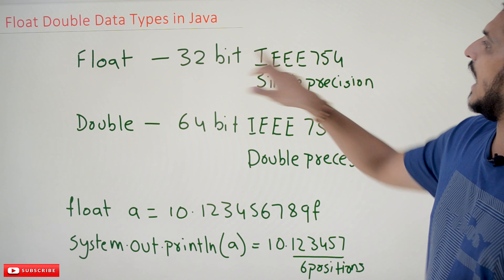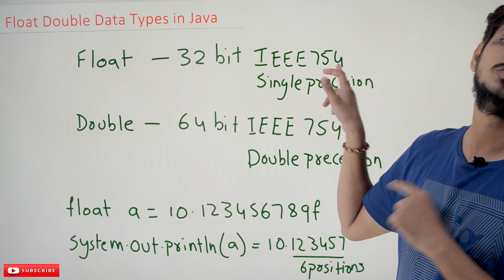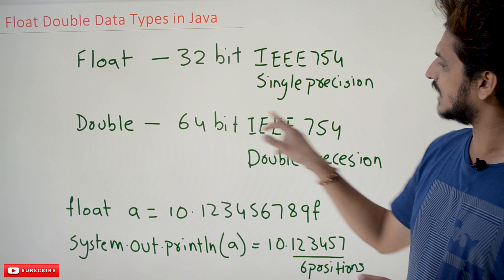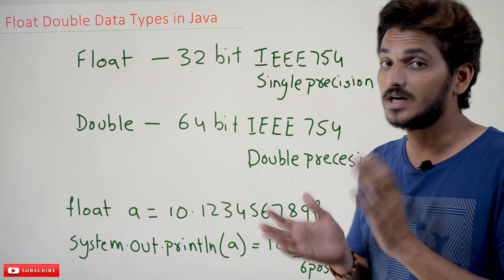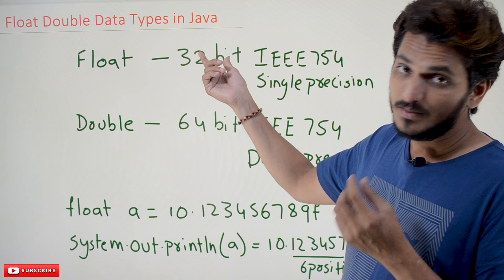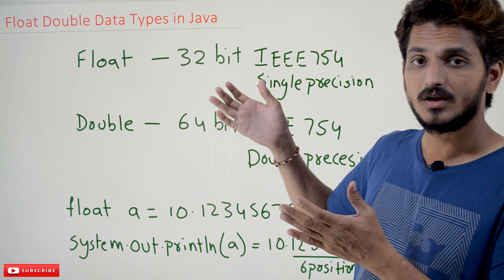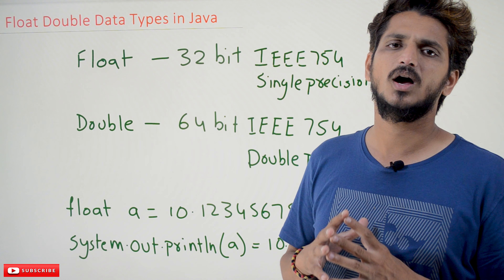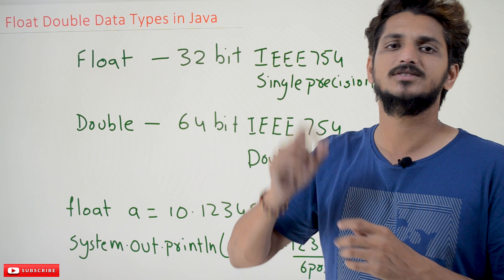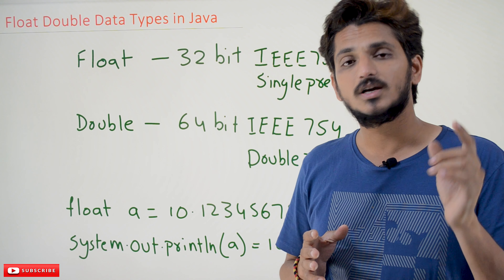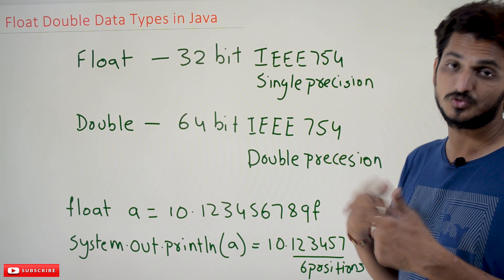There are standards to convert floating point numbers into binary numbers. Float is going to use IEEE 754 single precision standard. Double is going to use IEEE 754 double precision standard. The details of how conversion works, the minimum and maximum values storable in 32 bits — these are out of scope for this Java syllabus. If you are really interested in learning how floating point numbers are converted into binary digits, please take our Computer Organization and Architecture playlist, where we explain IEEE 754 single precision and double precision formats.